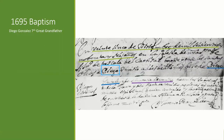Then we go to 1695, and this is a baptism of Diego Gonzalez, who is my seventh great-grandfather. In green you can see the date and the place where he got baptized, in baby blue his name, then dark blue the name of the father, and then the mother. All these images come from FamilySearch — that's where I was able to find them.